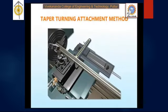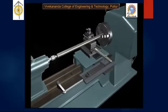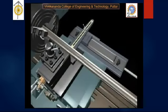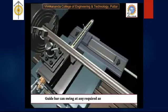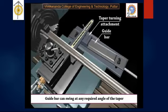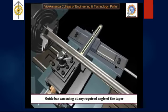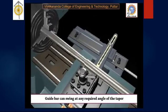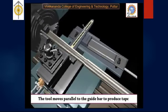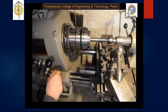The taper turning attachment method is used for producing a taper on a long workpiece, though the taper angle will be very small. An additional accessory — a bracket attachment — must be present on the lathe machine; otherwise this method is not possible. With the required speed, rotation is carried out and the taper angle is produced.